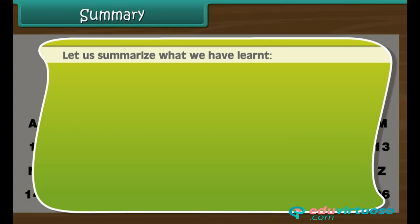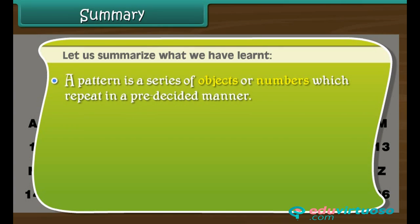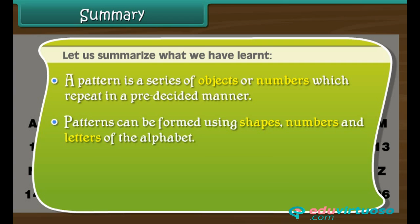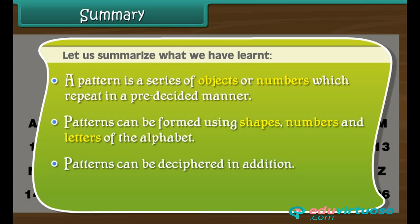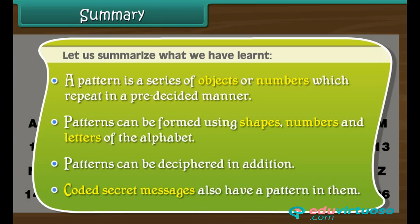Let us summarize what we have learned. A pattern is a series of objects or numbers which repeat in a pre-decided manner. Patterns can be formed using shapes, numbers and letters of the alphabet. Patterns can also be deciphered in addition, and coded secret messages have a pattern too.